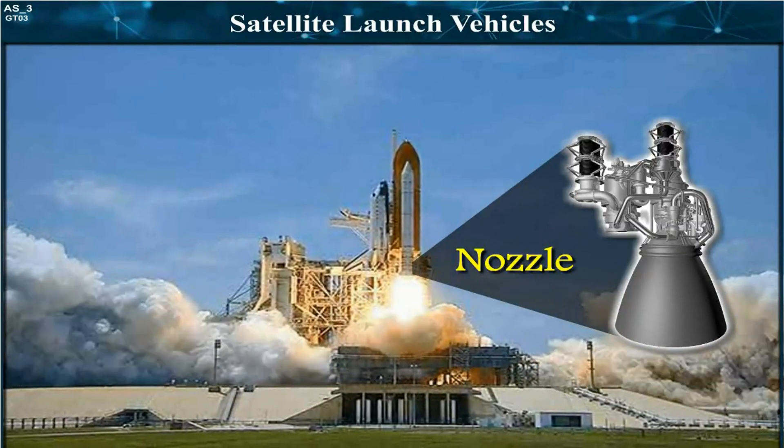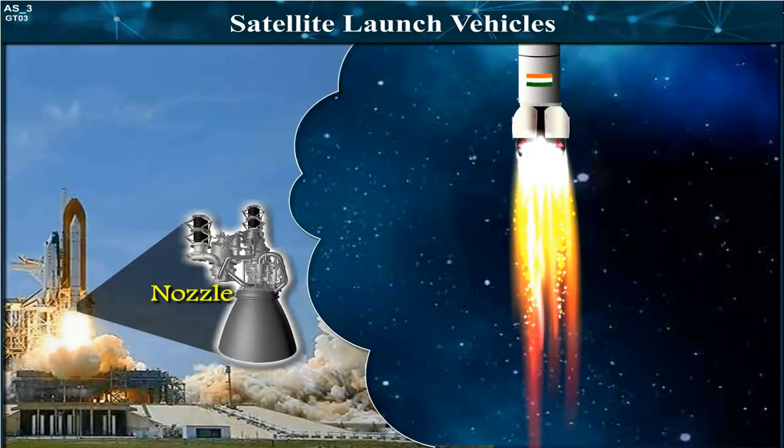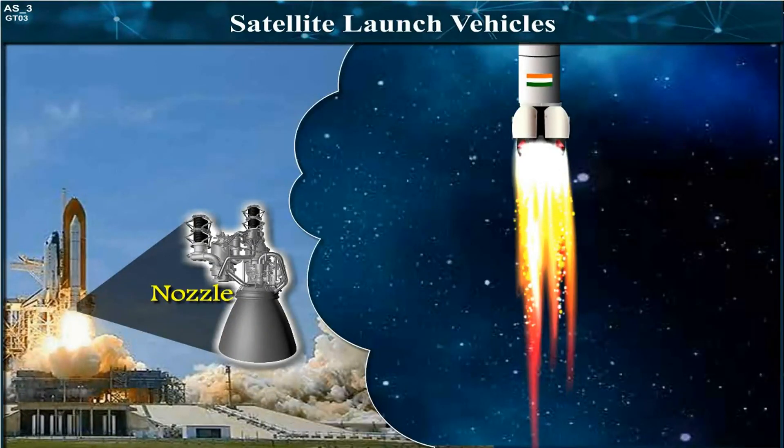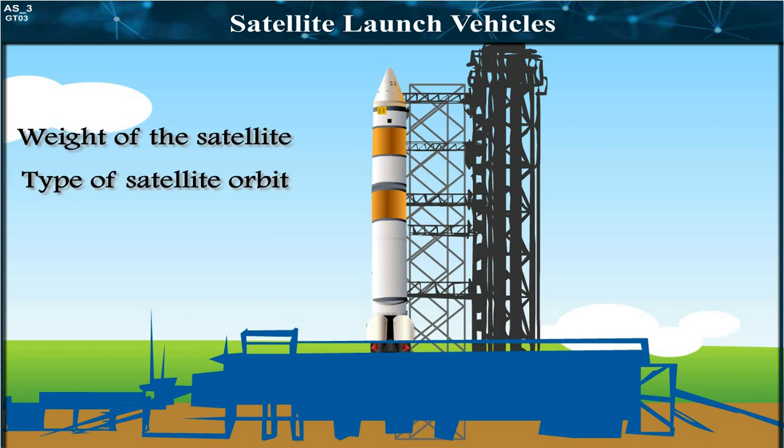As a reaction of this, a thrust acts on the vehicle which drives the vehicle high into the space. The structure of the launch vehicle is decided by the weight of the satellite and the type of satellite orbit. The fuel of the vehicle also depends on these factors.